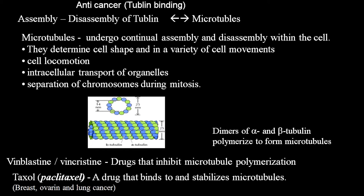Another example is tubulin. Tubulin assembles and disassembles to form microtubules, which undergo continual assembly and disassembly within the cell. They determine cell shape and are involved in cell locomotion, intracellular transport of organelles, and separation of chromosomes during mitosis. There are drugs which prevent the assembly — such as vinblastine and vincristine, which inhibit microtubule polymerization — and drugs which prevent disassembly, such as taxol. Taxol binds to and stabilizes the microtubule and is used in breast, ovarian, and lung cancers.